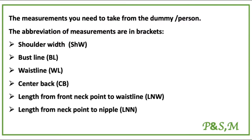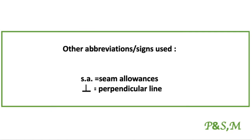Here are the necessary measurements you need to construct the block patterns and abbreviations used in my annotations. You can get back to this slide anytime you get stuck when you see my annotation and don't remember the abbreviation. These are additional abbreviations: SA for seam allowance and the inverted T for a perpendicular line.